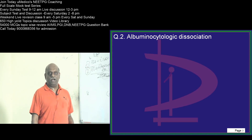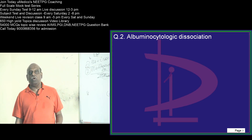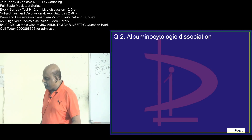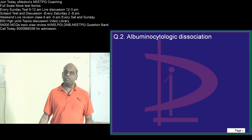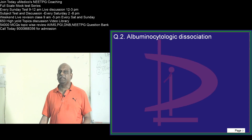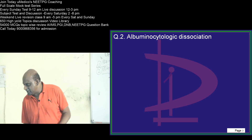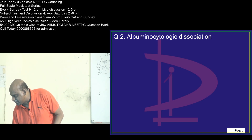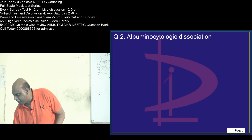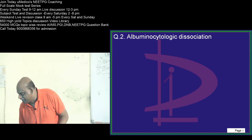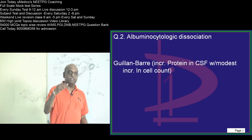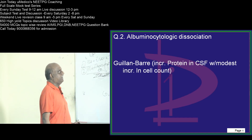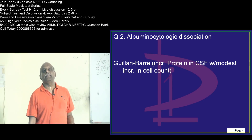Albuminocytologic dissociation — you've heard of this, right? What is the condition you immediately remember to which it is pathognomonic? Unlike in meningitis where your cell count also increases along with albumin, it doesn't happen here. So what is the condition where you find albuminocytologic dissociation? Very good. Everyone says GB syndrome, where there is an increase in protein in CSF with only a moderate increase in cell count.